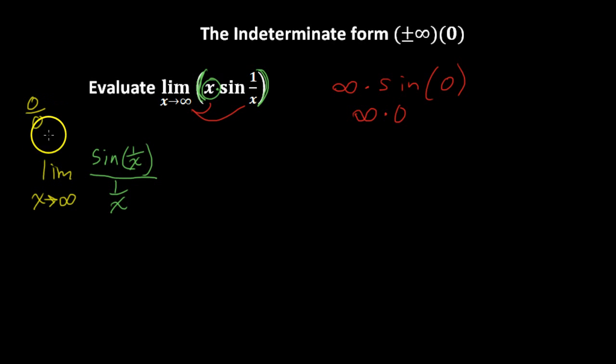But when you have this indeterminate form, or if you have the indeterminate form infinity over infinity, then you can apply L'Hopital's rule. And that is when you take the first derivative of the numerator and the first derivative of the denominator, and then try the limit again. So let's do that.